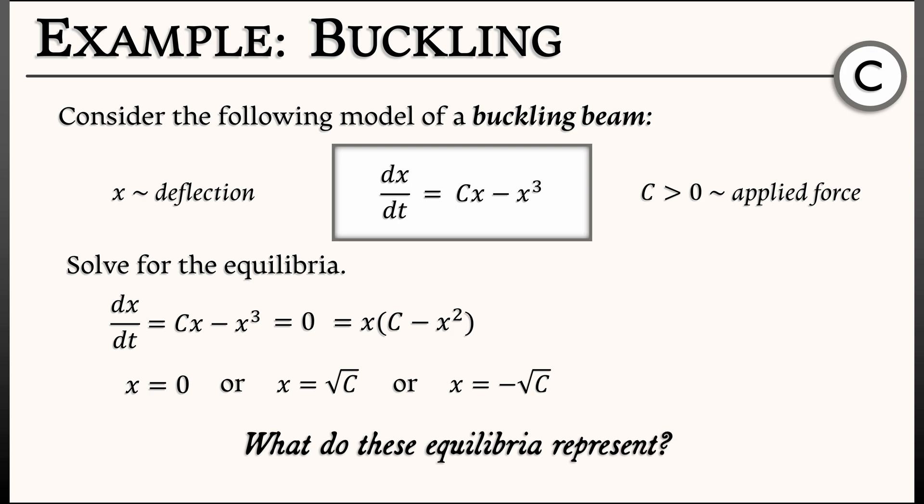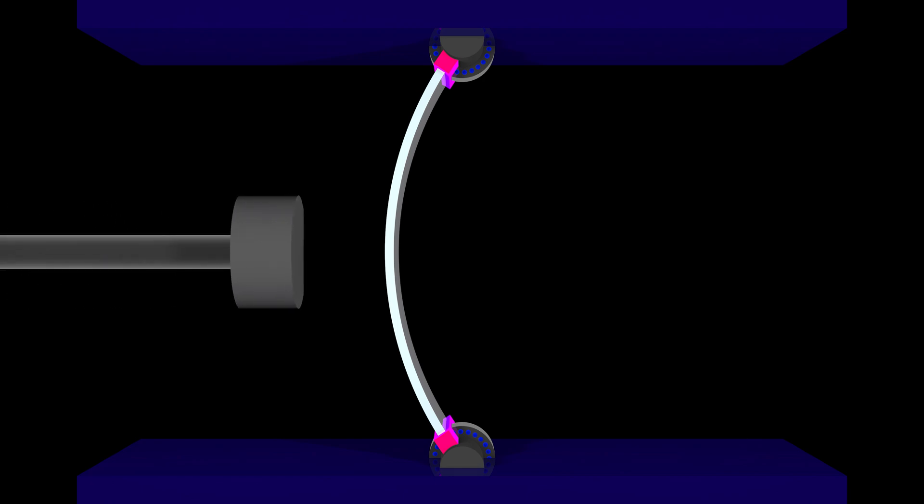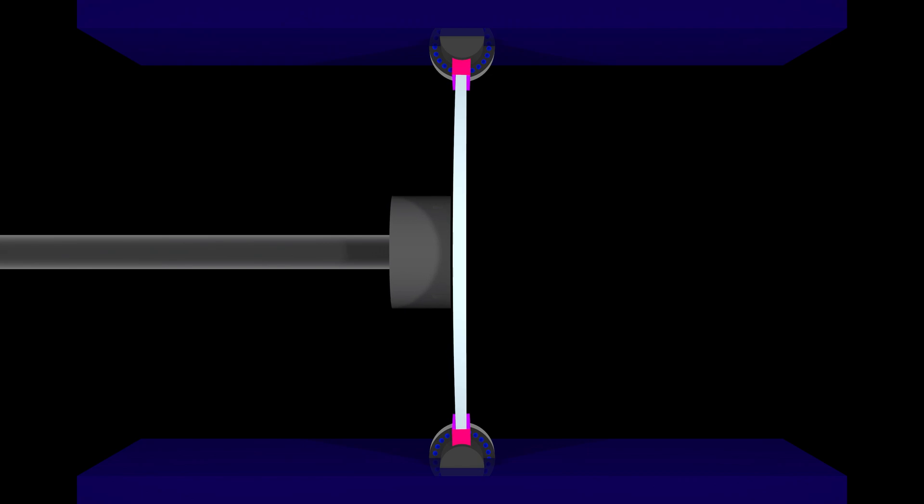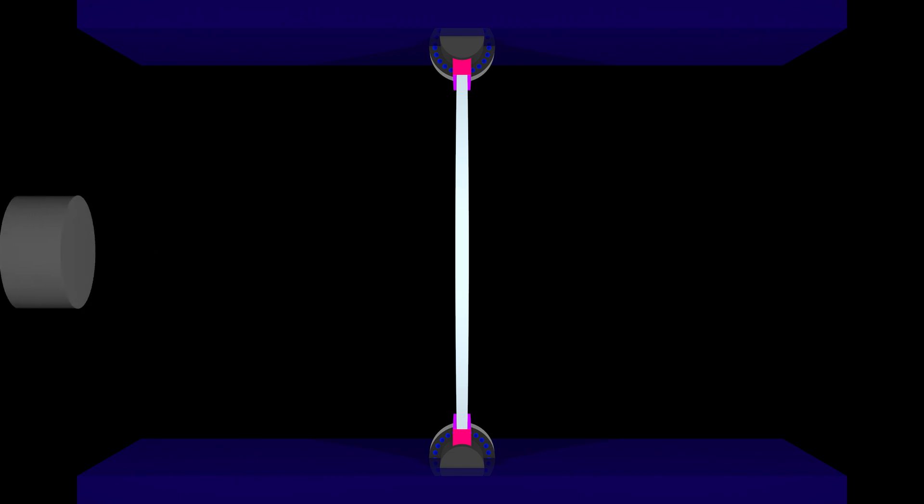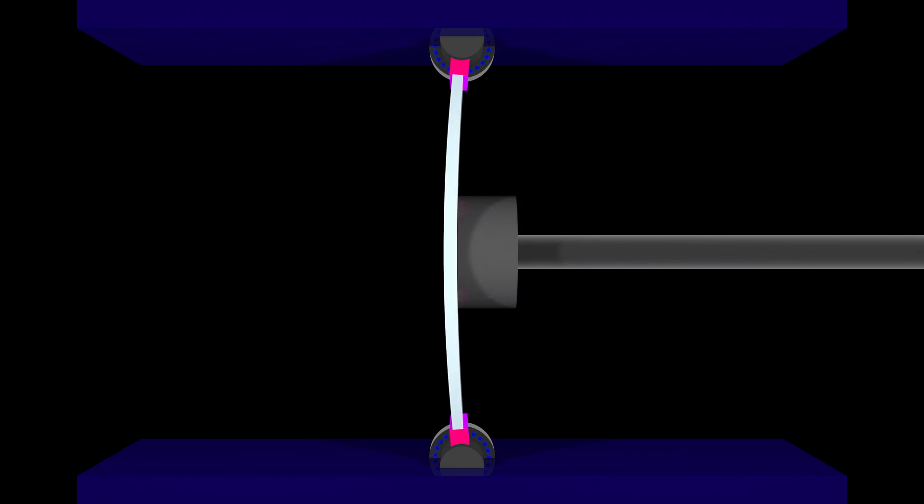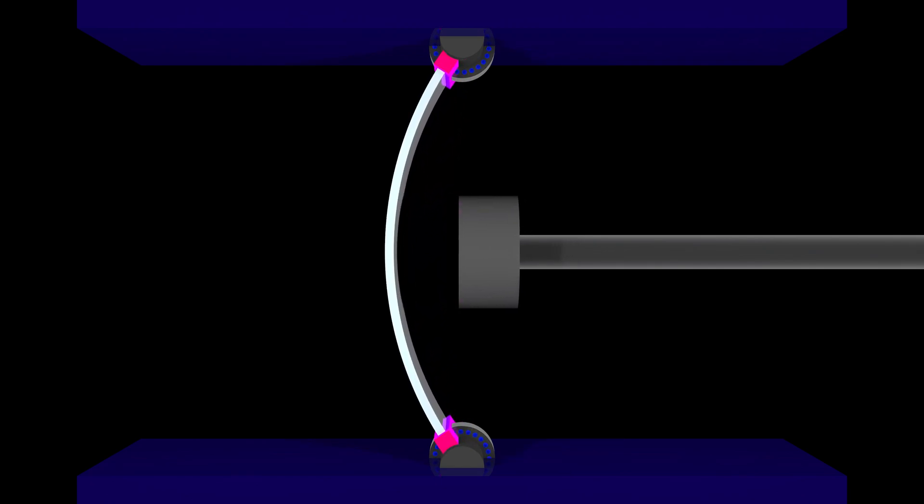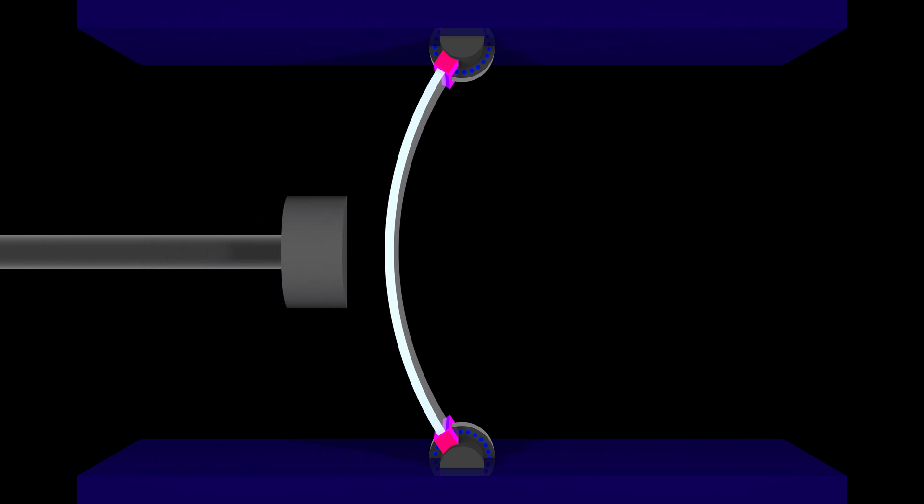But what do they mean? What do they represent? Well, let's think. This is a model for a beam that is buckling under some force, some load. And we've got these three equilibria. The equilibrium at zero means that there is no deflection. It's not buckling at all. It's as if we're squeezing this beam and it's just not bending. What do the equilibria at plus or minus square root of C represent? That represents some deformation, some buckling in the beam. And the two different equilibria of equal and opposite signs means you're either buckling to the left or you're buckling to the right.